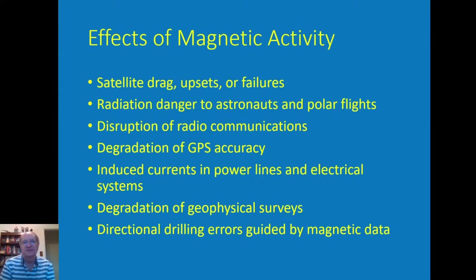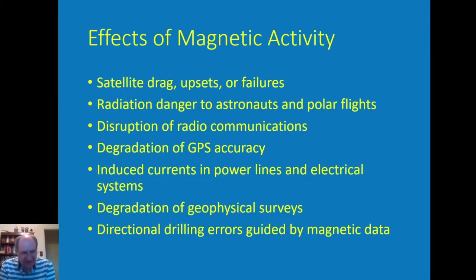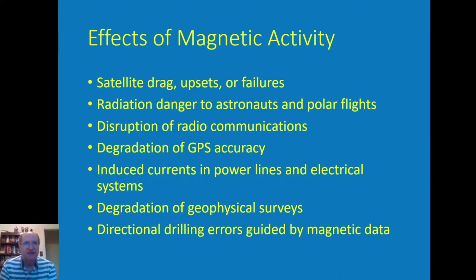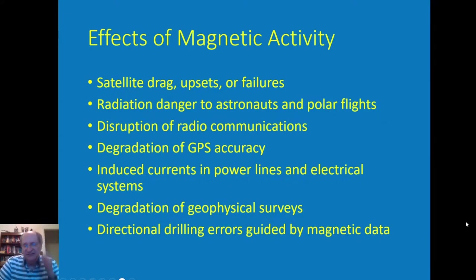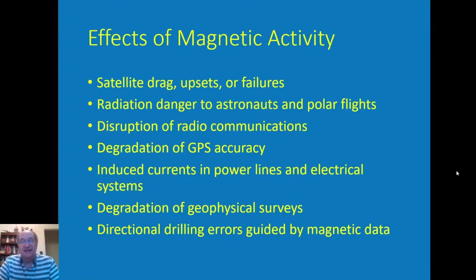These disturbances can cause many different effects on or around the Earth. They can affect satellites in orbit by creating more drag, degrading their orbits, or damaging components. Most satellites have hardened components — something that costs maybe 10 times as much as a regular op-amp and is designed to resist things like protons hitting it or spurious magnetic fields. Sometimes satellites can outright fail.